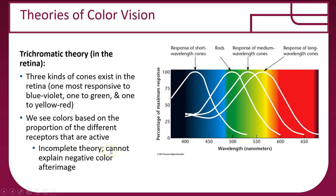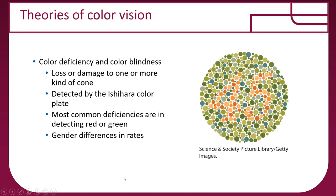This trichromatic theory is incomplete — it can't explain negative afterimages. Color blindness may arise when someone loses or damages one or more type of cone. Color plates — like the one showing a 45 in red dots on a green background — can be used to detect color blindness. The most common deficiencies are detecting red or green, and males have a greater frequency of color blindness than females.